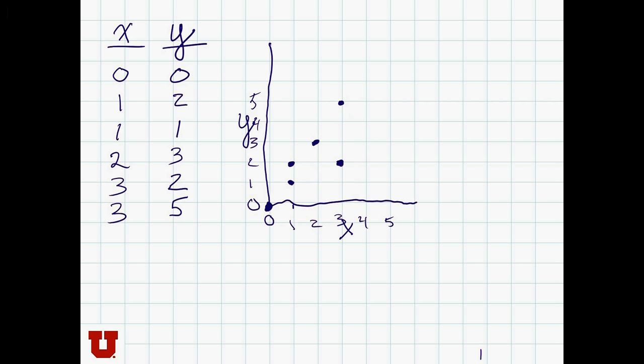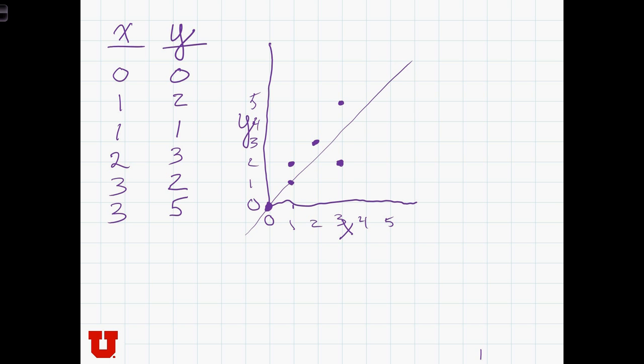So our scatter plot looks like this. While we only have 1, 2, 3, 4, 5, 6 points in this plot, it seems pretty clear that these two variables are also related to each other.